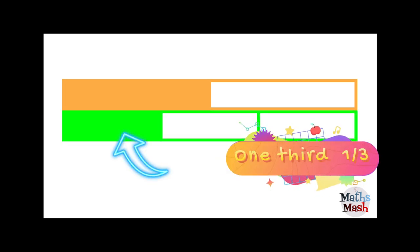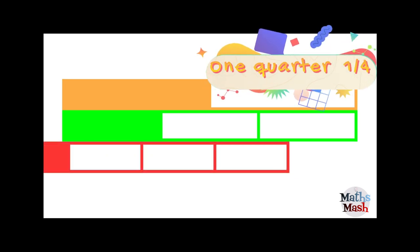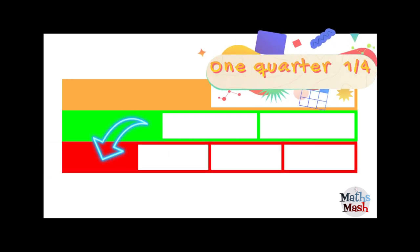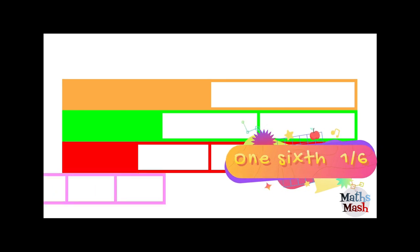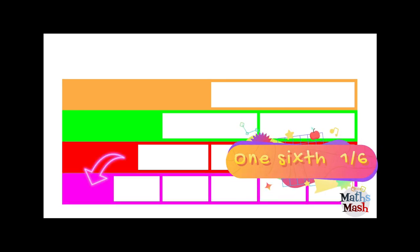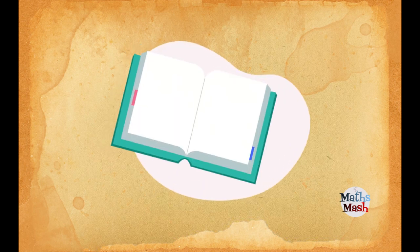So we have one-half is our biggest fraction, one-third is our next biggest, one-quarter is our next biggest fraction and finally one-sixth would be our smallest fraction. So let's have a think.